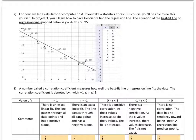For now, we're just going to let a calculator or computer tell us which line is the best. If you take a statistics or calculus course, you'll be able to figure this out by hand on your own. The equation of the best fit line or the regression line graphed below is y equals negative 4.3x plus 53.95. Pretty close to what we came up with using two points, but it's a little bit different.